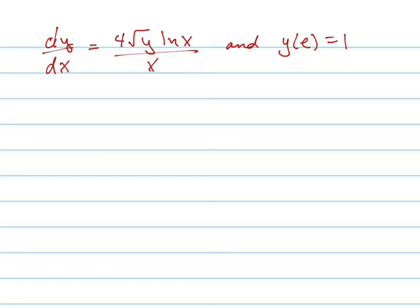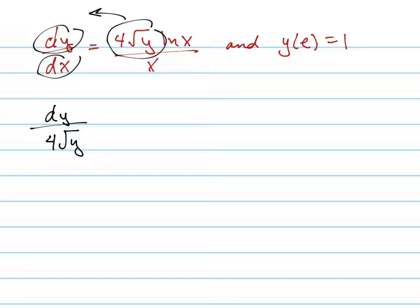So what we're going to do is separate the x's and the y's, and then we're going to integrate both sides. So let's get this to that side, and we do that by dividing it. So dy over 4√y, I'm dividing it on both sides. I'm dealing with that, and I'm going to multiply dx to the other side at the same time.